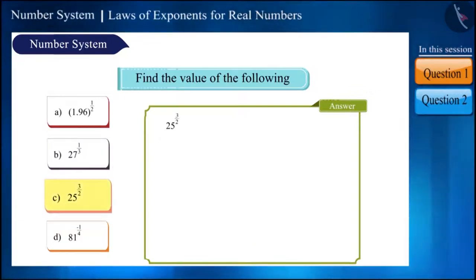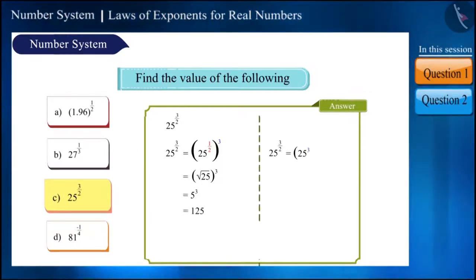Here, the power of 25 is 3/2. We'll write it in brackets as 25 to the power 1/2, and then to the power 3. The power of 25 is 1/2, that is, the square root of 25. Now we have 5 to the power 3. That is, cube of 5, which will be 125.